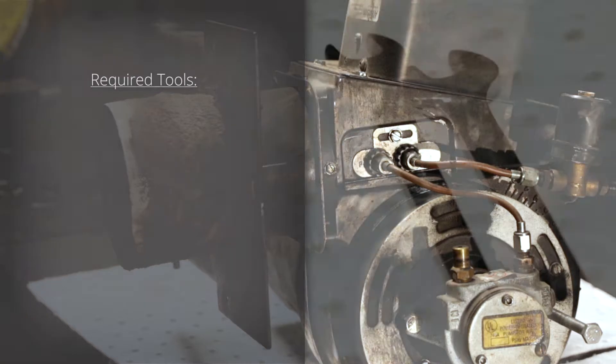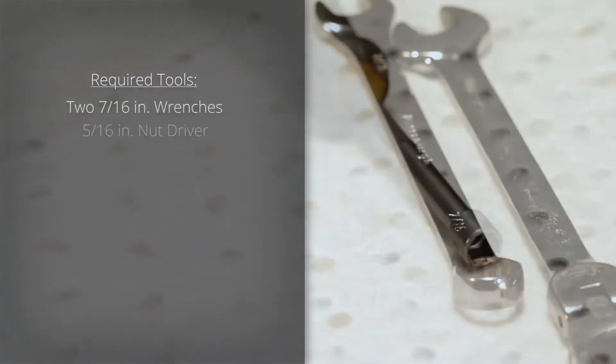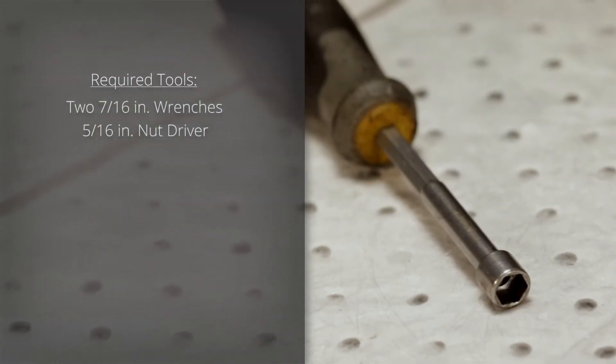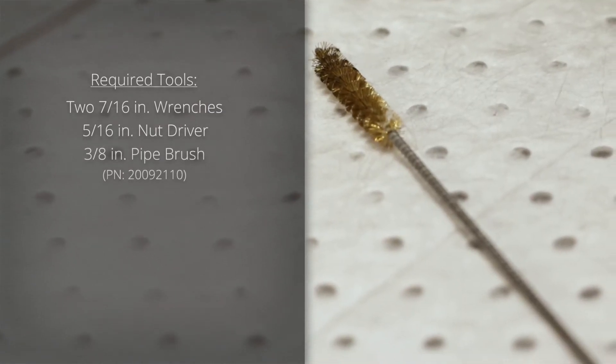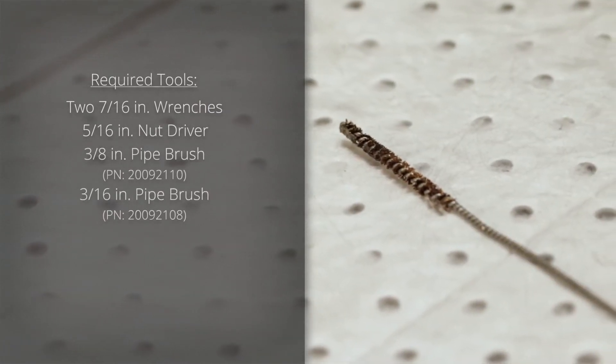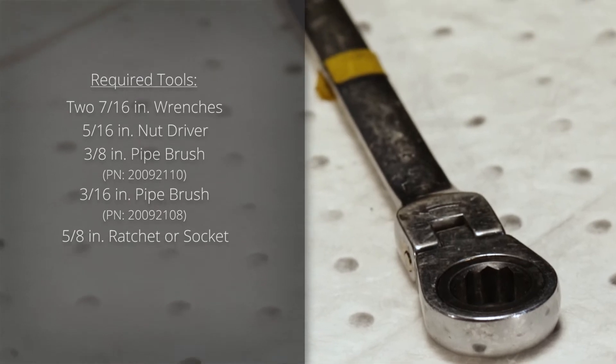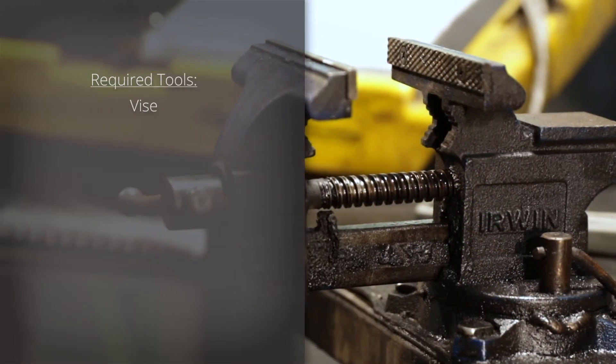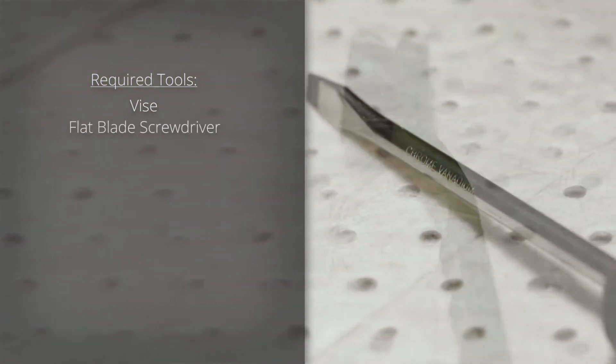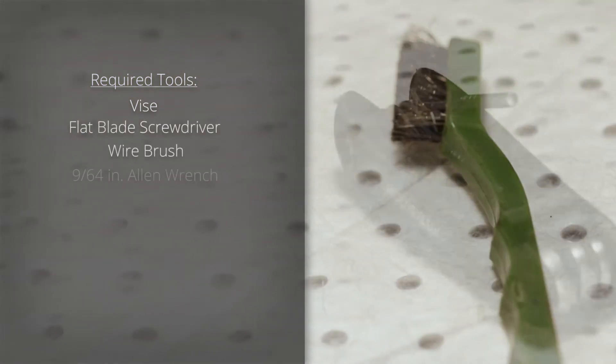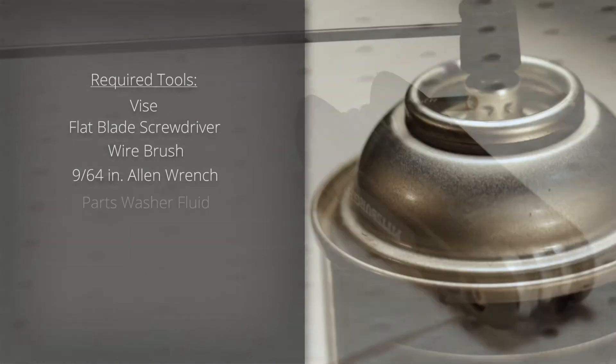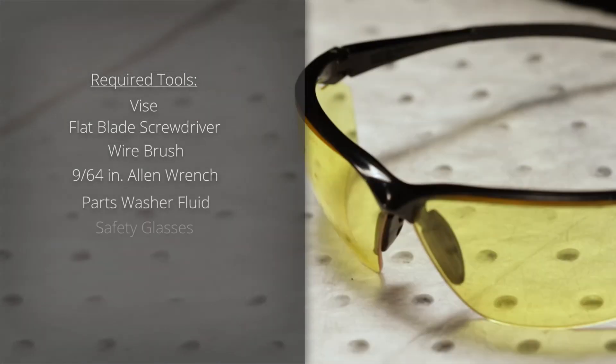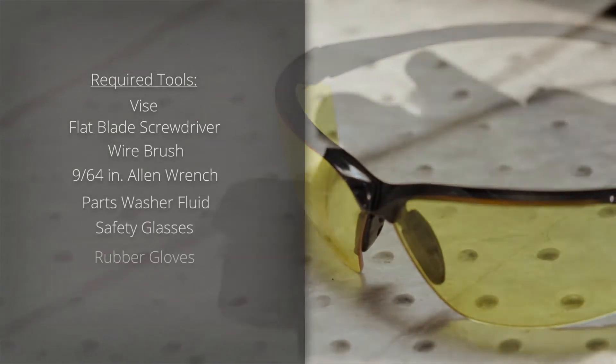Here's a list of tools you'll need: two 7-16th inch wrenches, a 5-16th inch nut driver, a 3-8th inch pipe brush, a 3-16th inch pipe brush, a 5-8th inch ratchet or socket, a 1-quarter inch nut driver, a vise, a flat blade screwdriver, a wire brush, a 9-64th inch allen wrench, parts washer fluid, safety glasses, and rubber gloves.